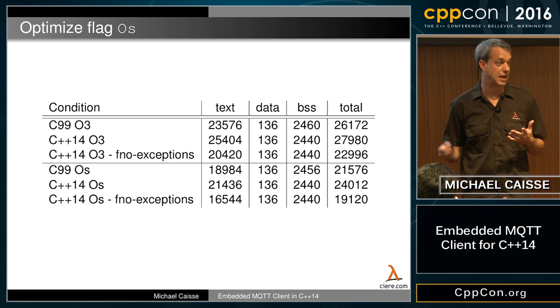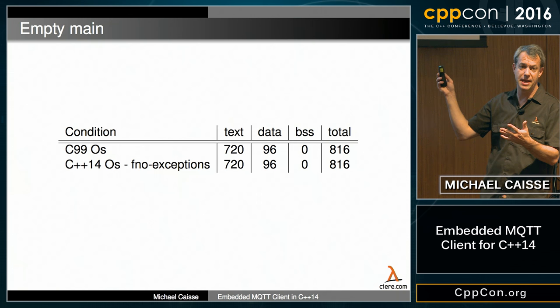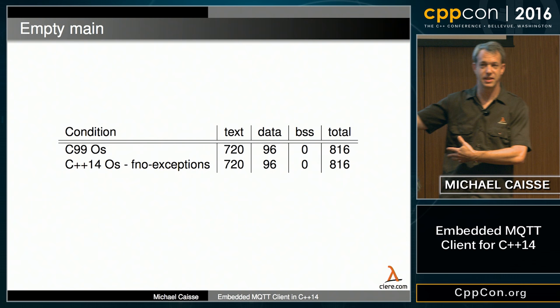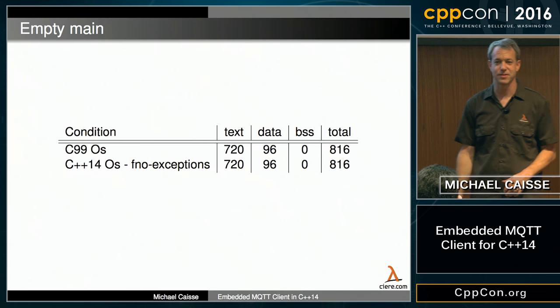What happens with an empty main? With nothing in main, on an even playing field, C99 and C++14 are configured and tuned enough to have pretty much the same starting basis. Anything bad that happens after this point is my problem.